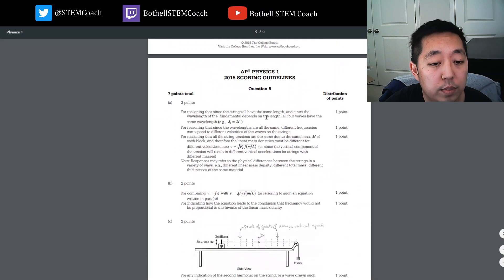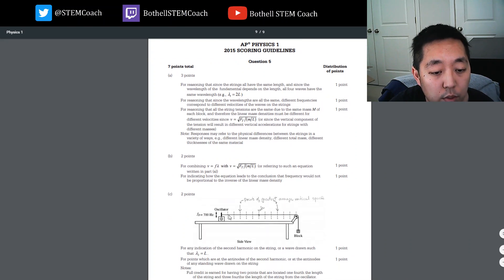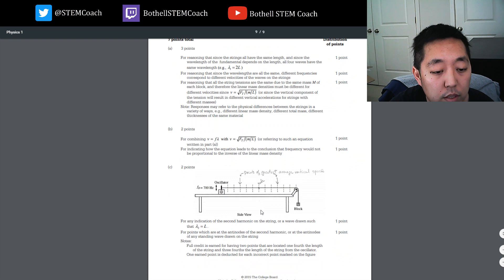Okay, let's take a look. For reasoning that since the string is the same length, this is the wavelength of the fundamental frequency. All four waves have the same wavelength. Which I did. For reasoning that since the wavelength is still the same, different frequencies mean different velocities. Which I did. The same mass, and therefore the linear mass must be different since FT is not equal to M over L. Or strings of different masses. Okay. Different linear mass density. Different thickness of the same material. Okay, so I'm just describing that the mass of the rope is different even though the length is the same. Okay. For combining F lambda with that, the equation leads to the conclusion of the frequency to not be proportional to inverse. Points of greatest error at 1, 2, 3 and 1, 2, 3 from the end.